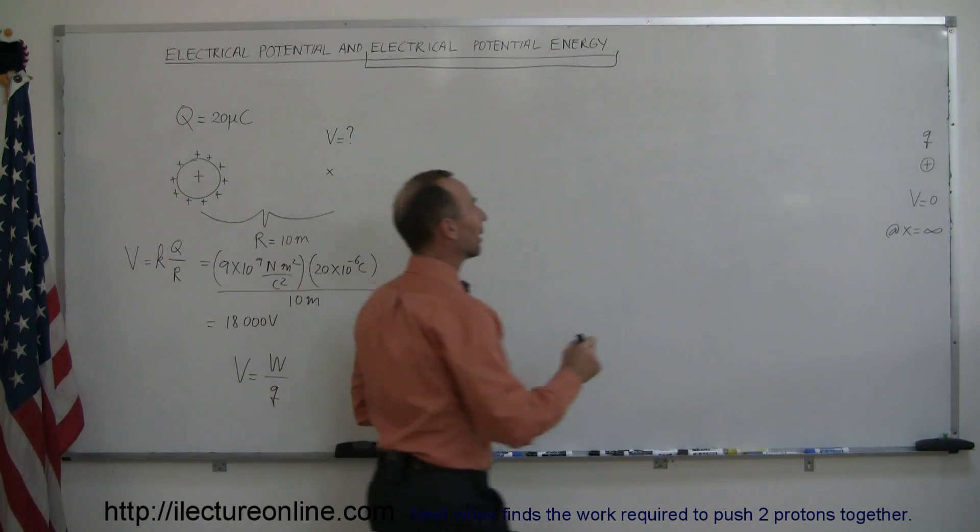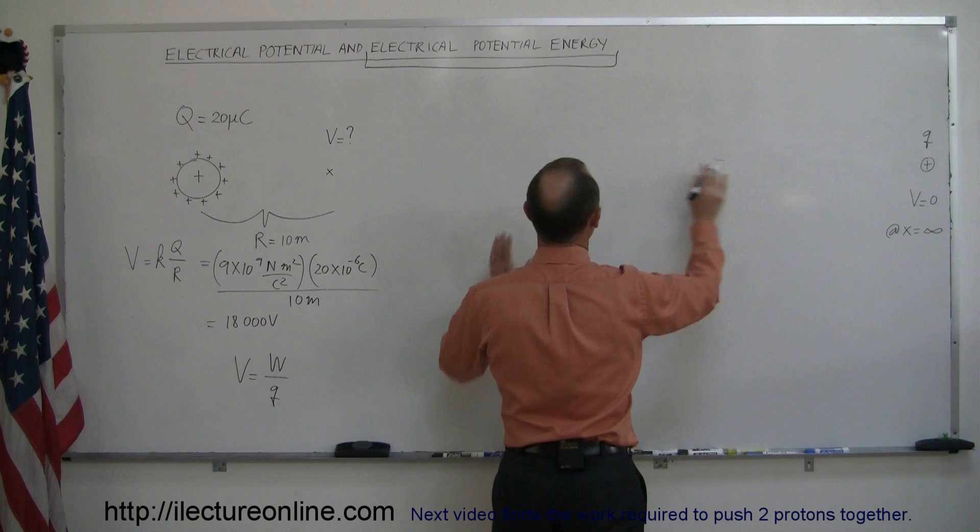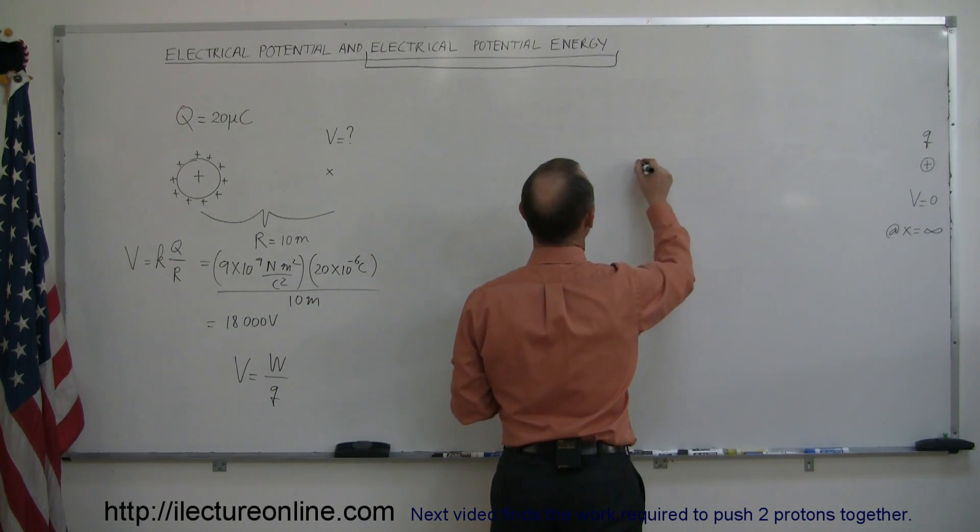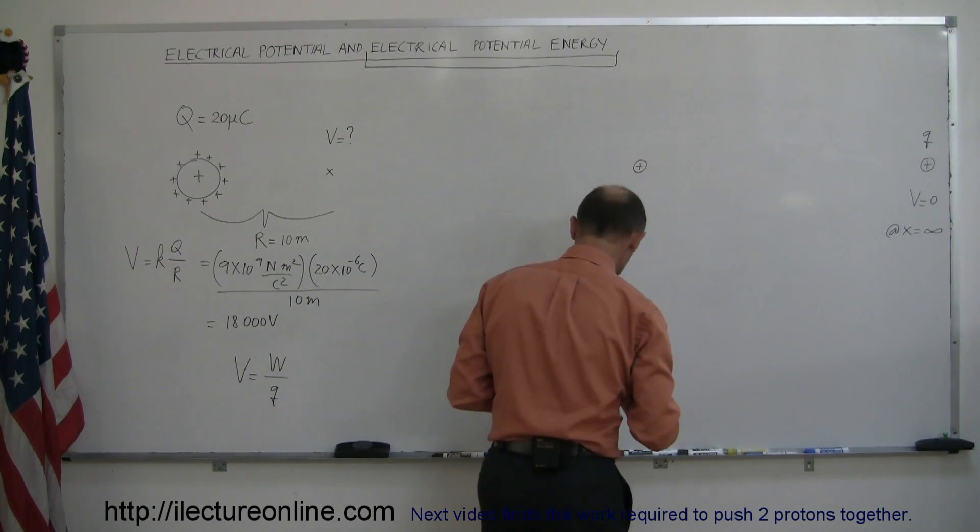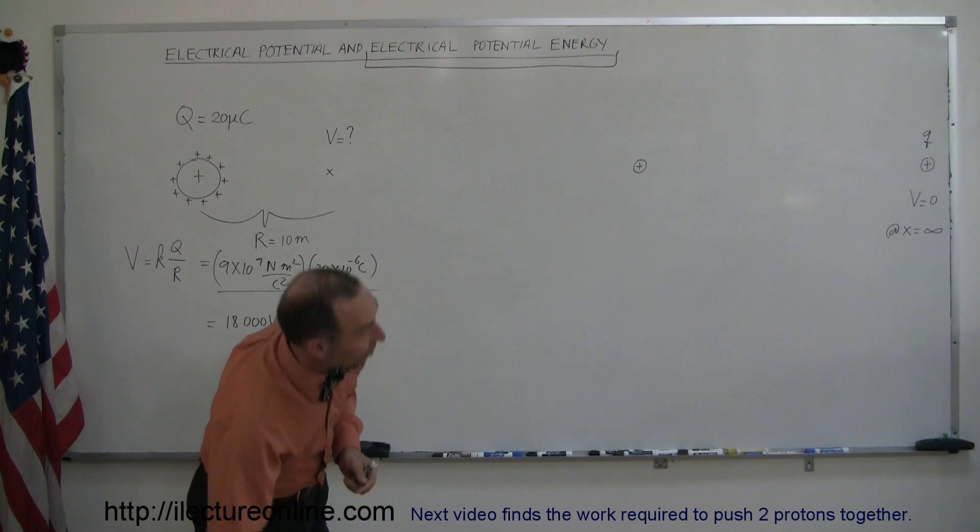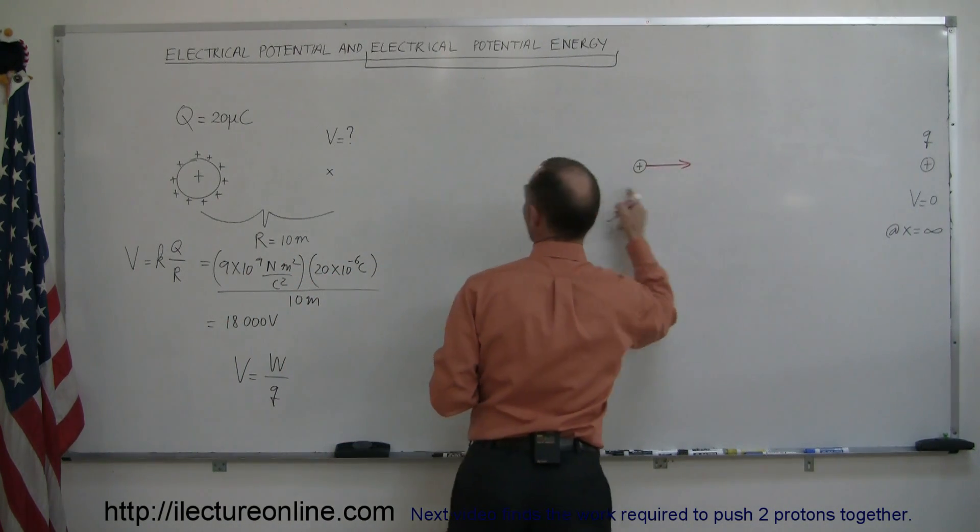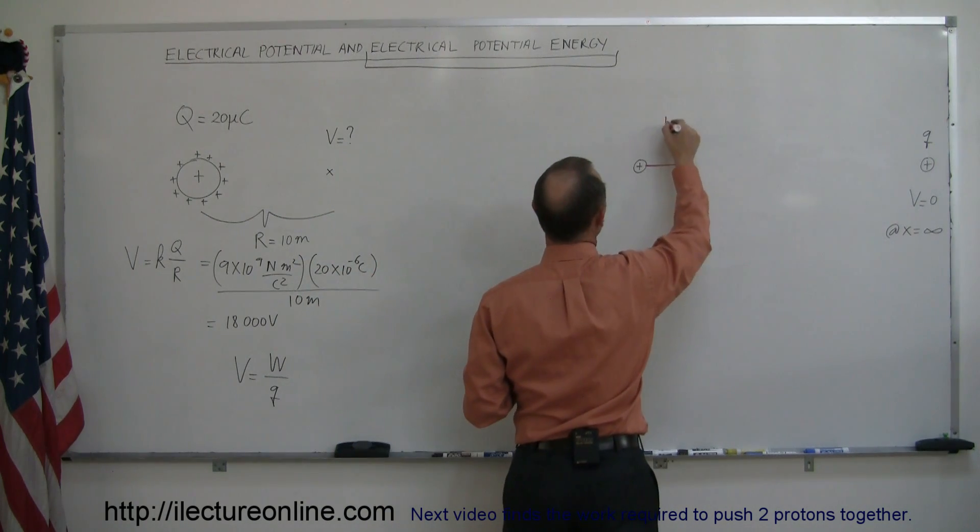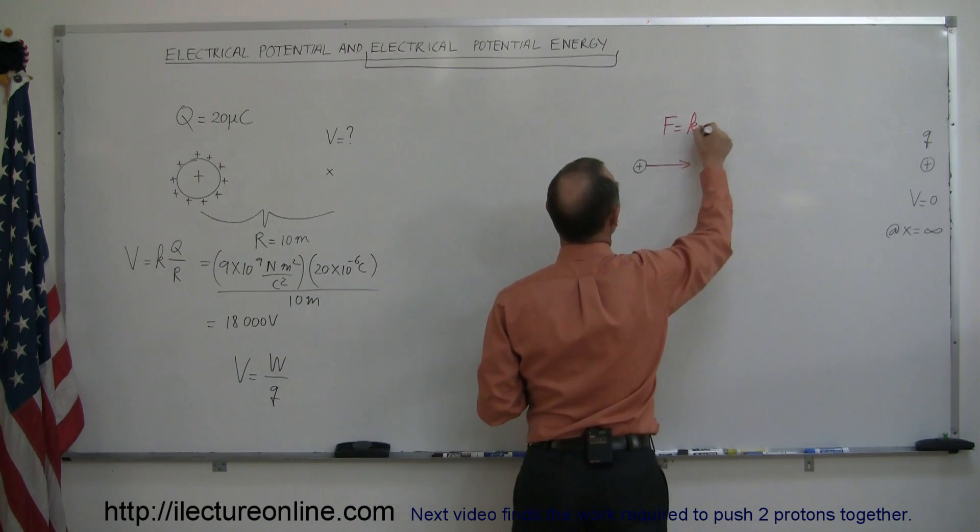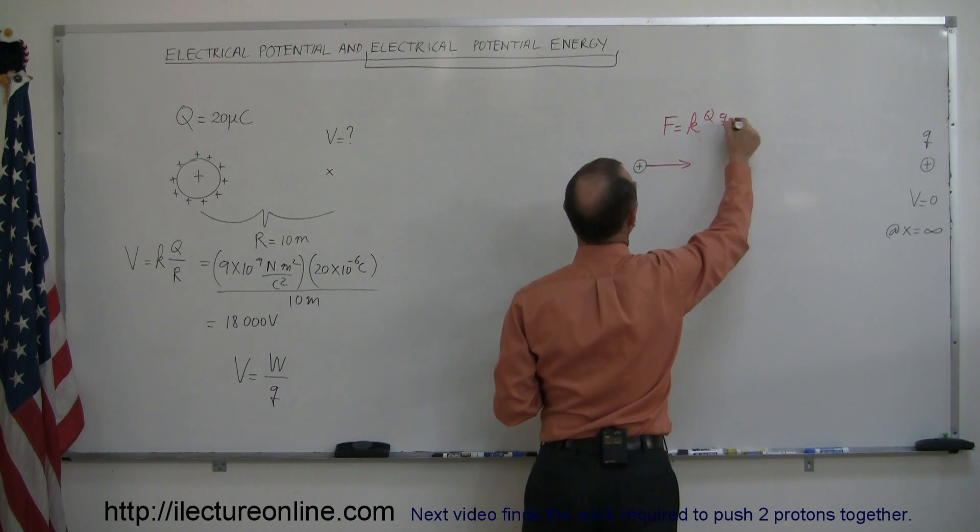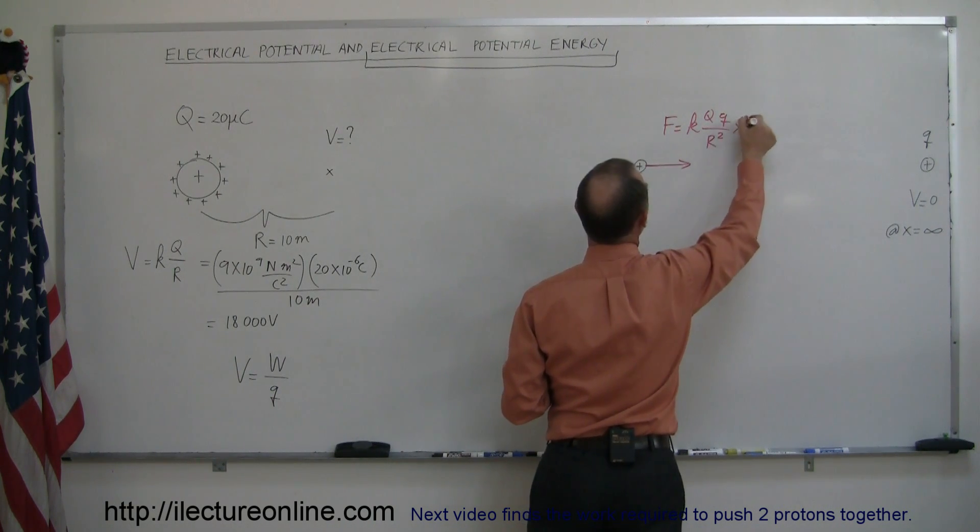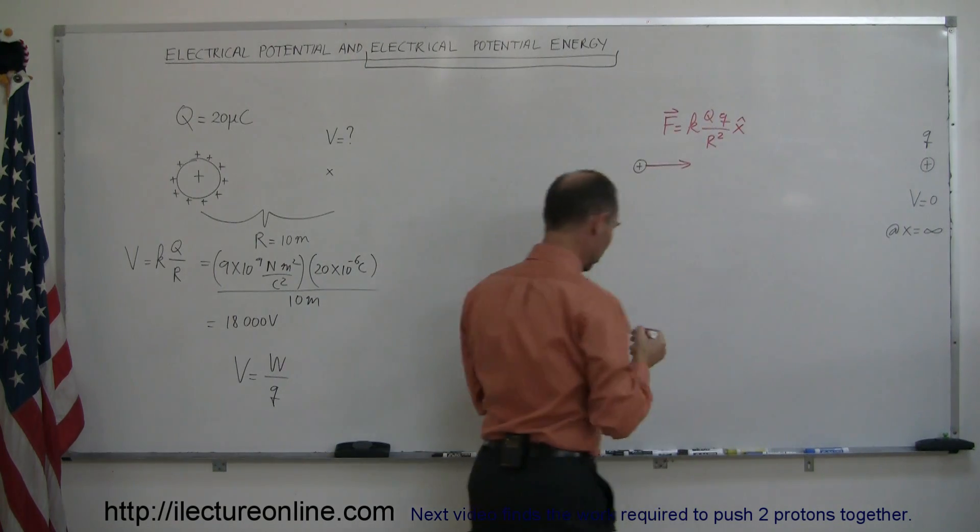The way to do that is to imagine this. Let's place a charge somewhere in the middle where we're pushing the charge in that direction. At that moment, that charge is feeling a force to the right, a repulsive force due to the presence of this charge, and that force here is equal to K times big Q, little Q divided by the distance between them squared, and that would be in the positive X direction.